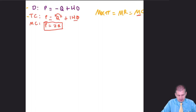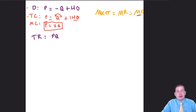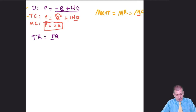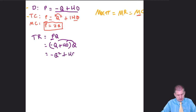Next we need to figure out revenue. Right now all we have is demand — there's no total revenue formula. But we can use a little algebraic trickery: total revenue is price times quantity. We can plug the demand curve in for P, giving us (negative Q plus 40) times Q, which simplifies to negative Q squared plus 40Q. That is our total revenue formula.